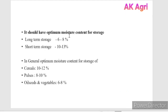We should maintain optimum moisture content for storage. For long-term storage, it is 6 to 8 percent; for short-term storage, it is 10 to 13 percent. In general, the optimum moisture content by crop group is: cereals — 10 to 12%, pulses — 8 to 10%, and oilseeds and vegetables — 6 to 8%.